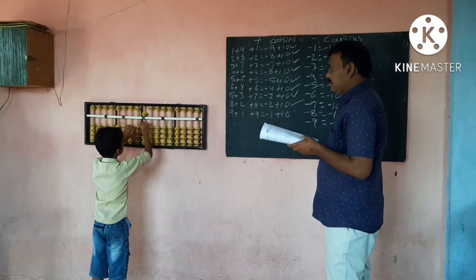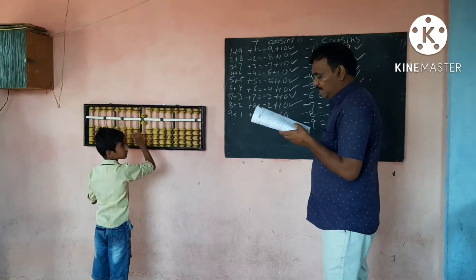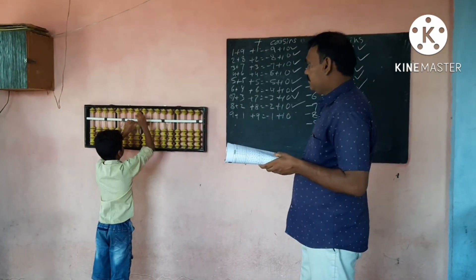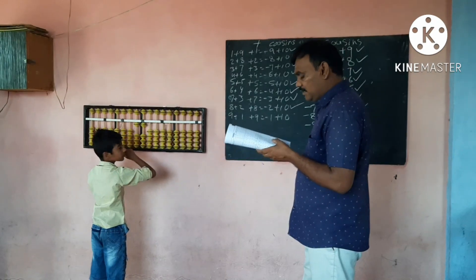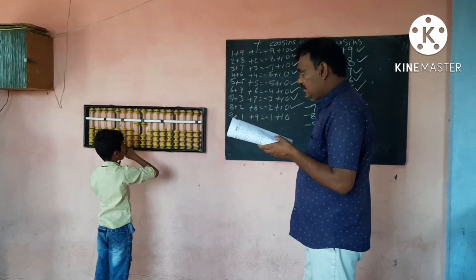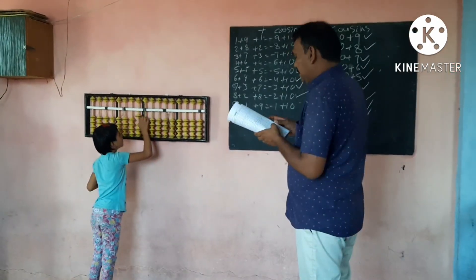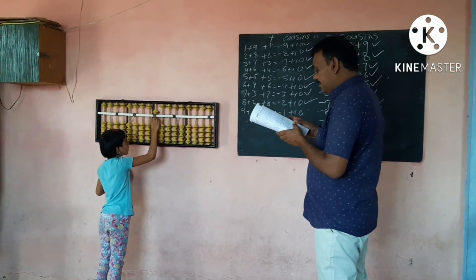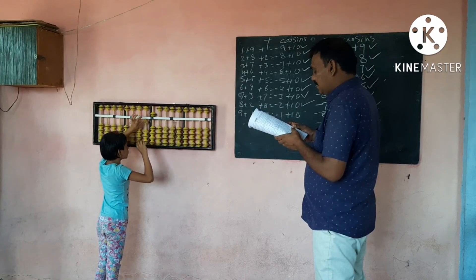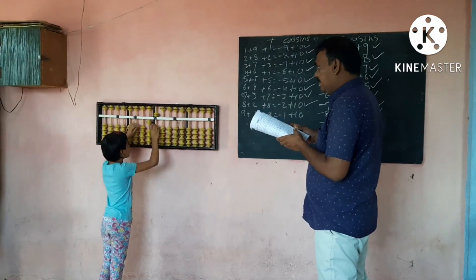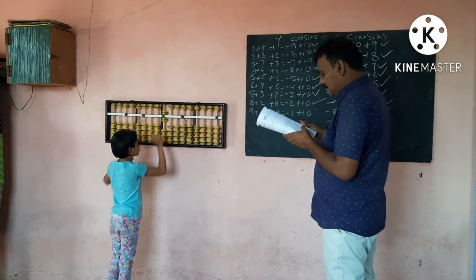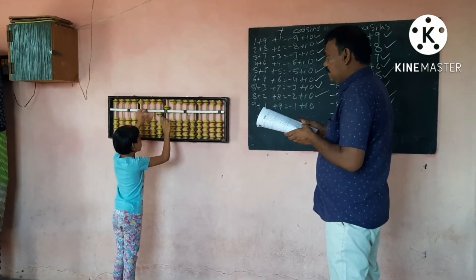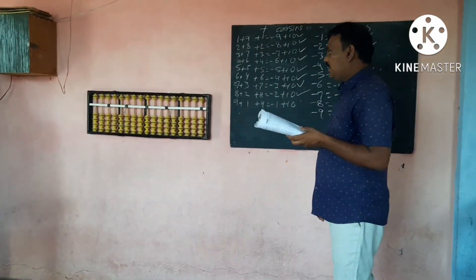Plus 5. 10th answer: 11. Plus 6, plus 9, minus 9, plus 9. 15, minus 4.